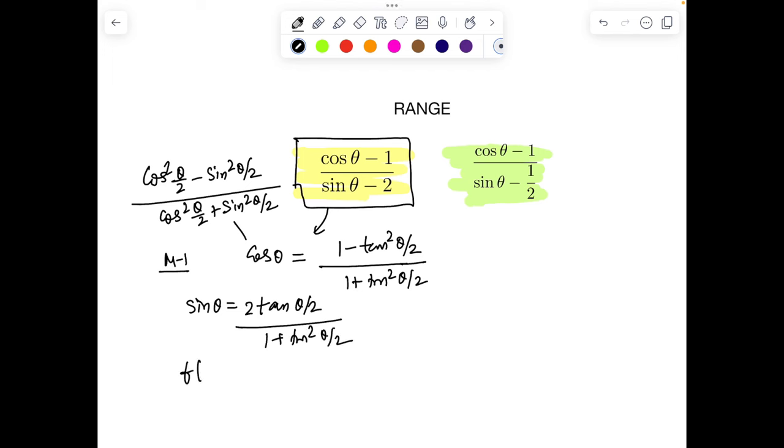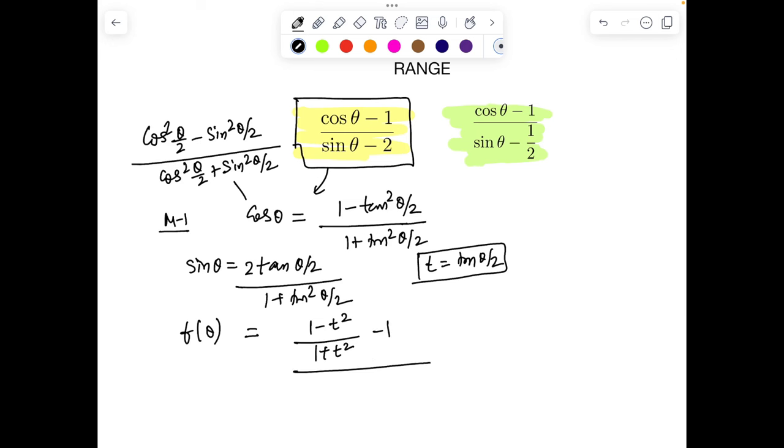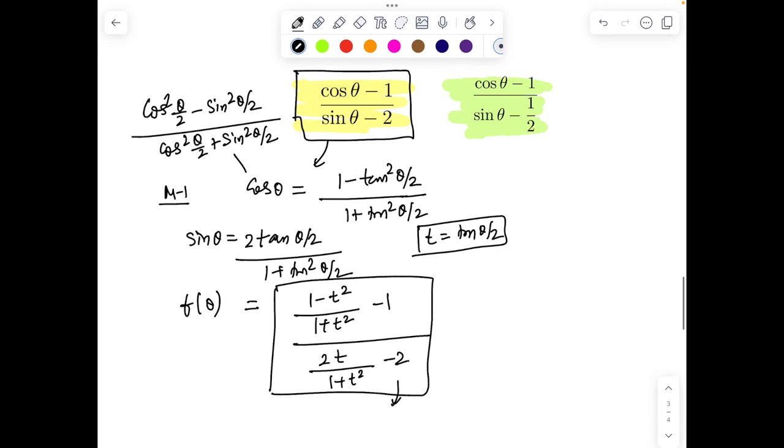Now just substitute this in the expression. Let's call it f(θ). We have cos θ - 1, so (1 - t²)/(1 + t²) minus 1, over 2t/(1 + t²) - 2, where I'm assuming t = tan(θ/2). It's quadratic by quadratic form, so you can set it as y and impose the discriminant condition Δ ≥ 0 to get the range.